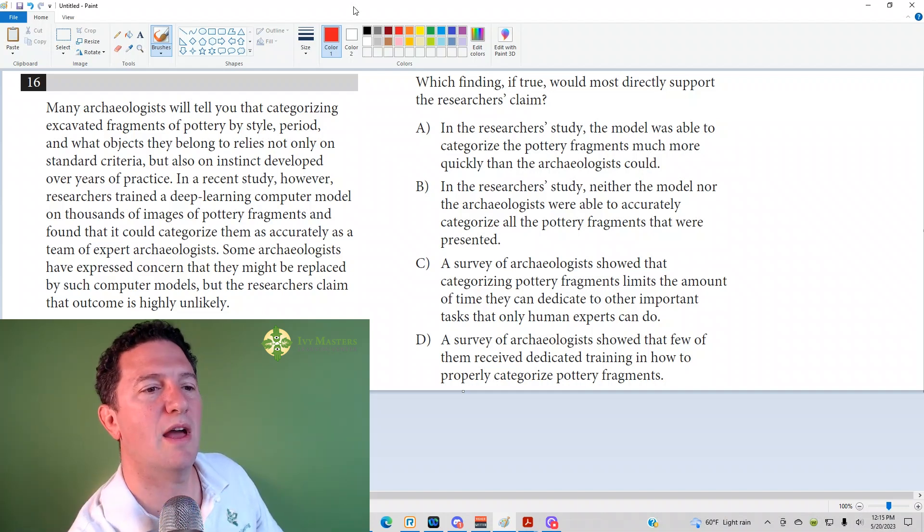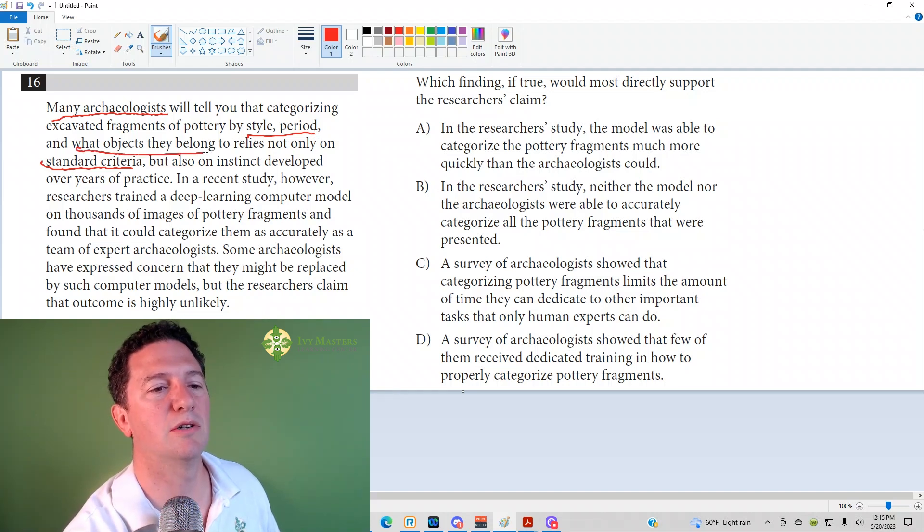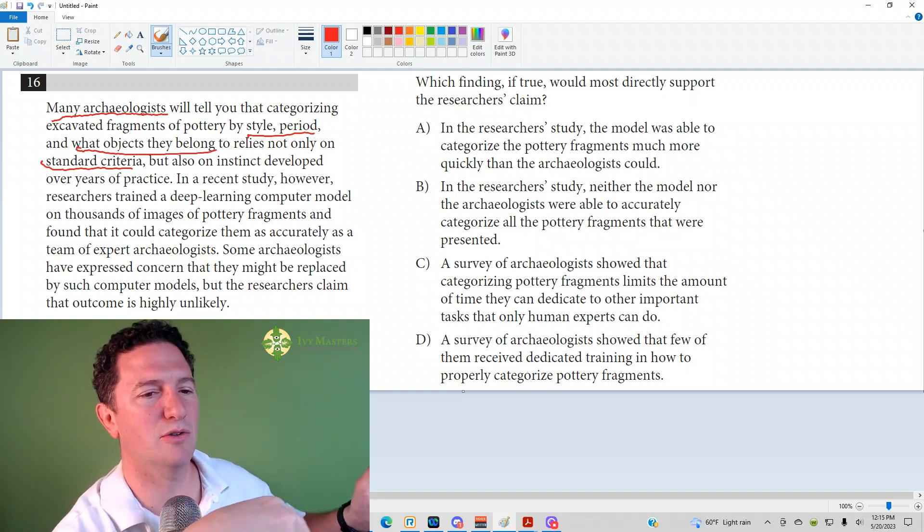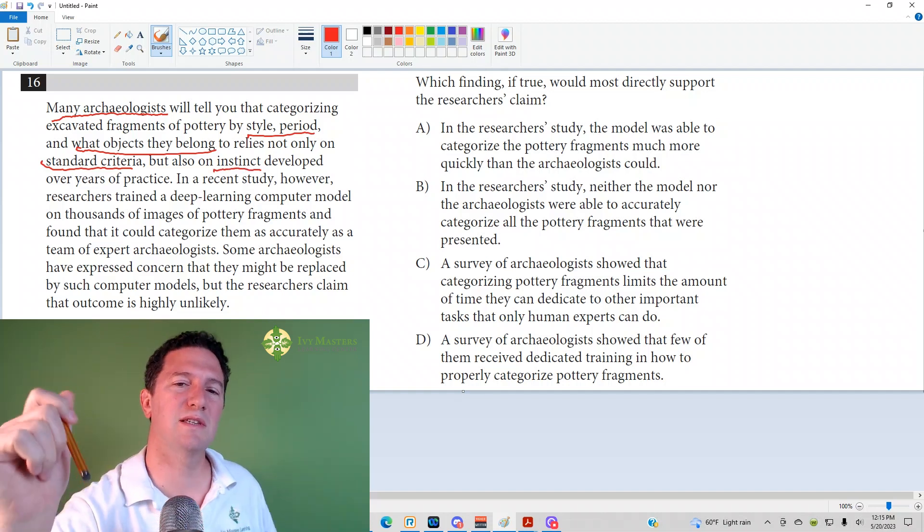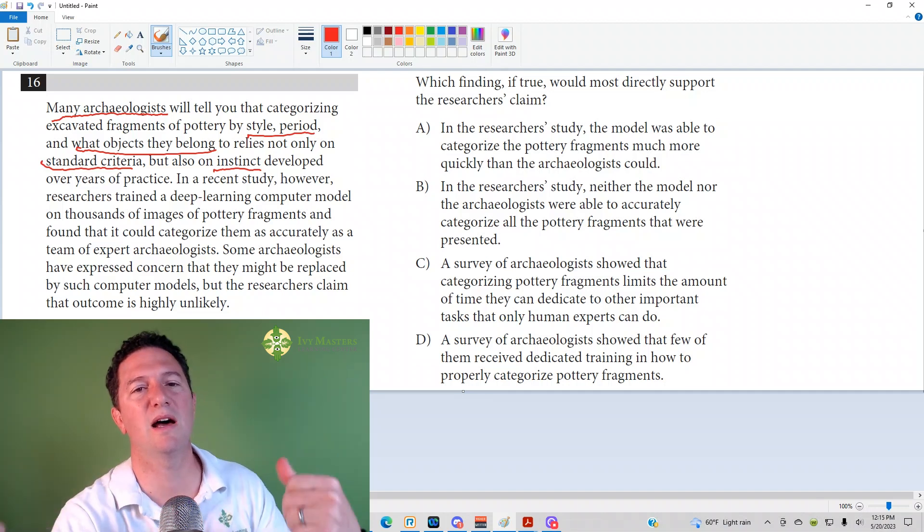relies not only on standard criteria, but also on instinct developed over years of practice. So what do we have in the opening sentence? Archaeologists are like, yeah, there's this standard criteria, and that might be style, period, what objects they belong to. But it's also like, hey, I'm thinking this one goes with that one, and so instinct, which is very distinctly human. It's not a non-human thing.